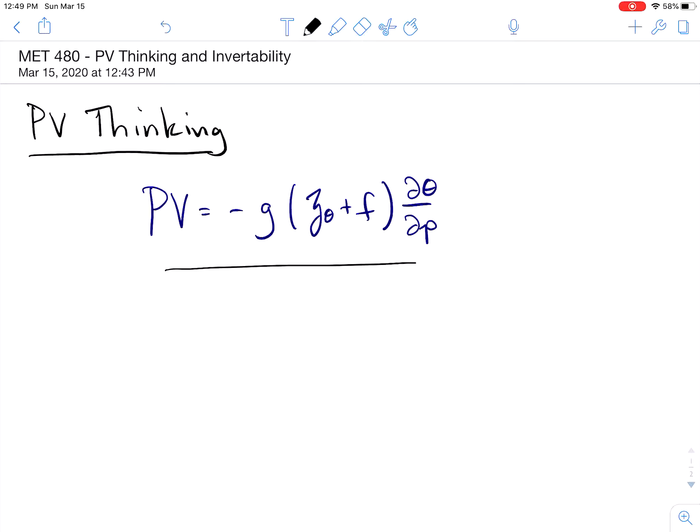So this equation really is the multiplication or the product of two things: absolute vorticity, zeta theta plus F, times the static stability, which is the combination here of minus G d theta dP.